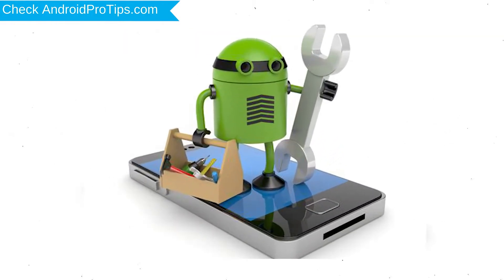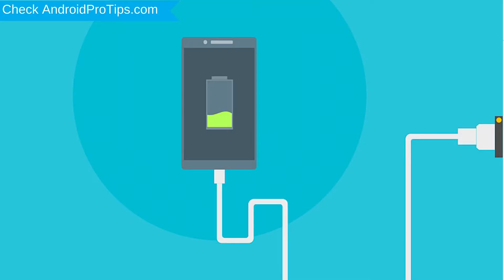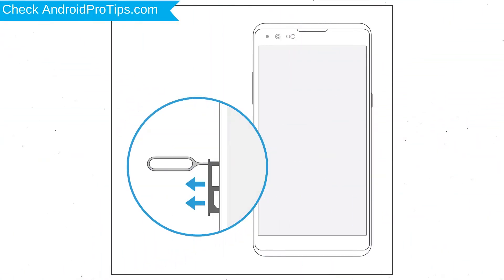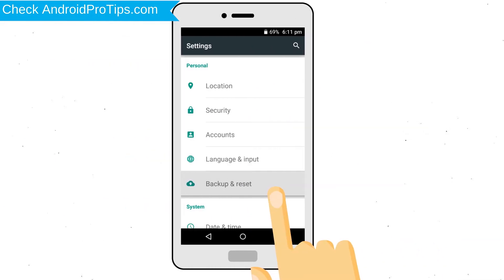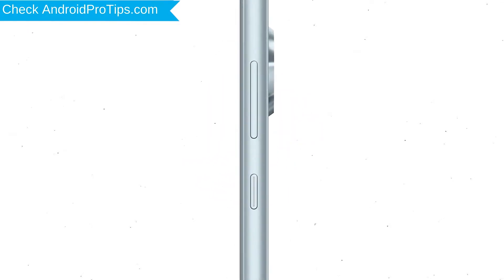Before resetting your mobile, your battery must be above 50%. Remove SD Cards and SIMs. Back up your Android mobile data if possible. Power off your mobile by holding the power button.